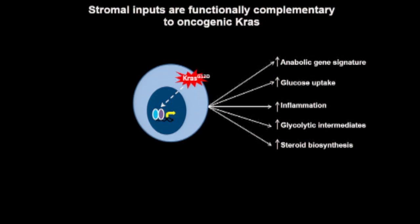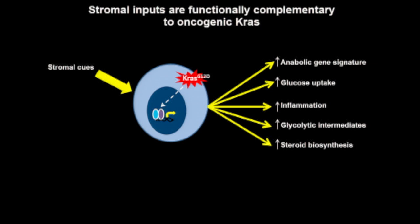Together, others have shown that oncogenic KRAS activates a transcriptional network leading to induction of an anabolic gene signature, increasing glucose uptake, expression of pro-inflammatory genes, increasing intracellular levels of glycolytic intermediates, and increasing the presumed capacity for steroid biosynthesis. I find that in the context of oncogenic KRAS, stromal signals drive similar cellular responses, suggesting these networks may share common gene regulatory effectors, which would make for appealing therapeutic targets.